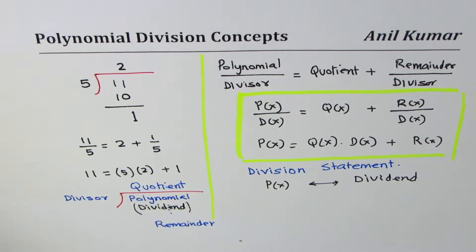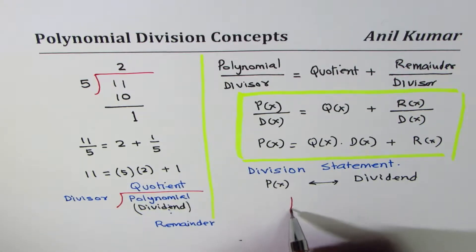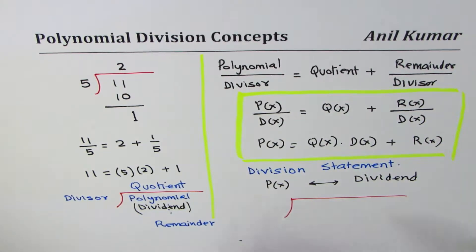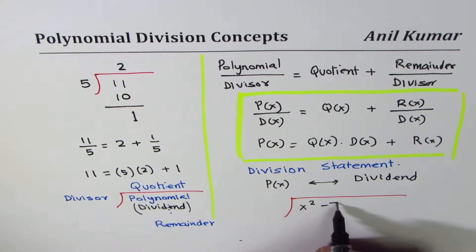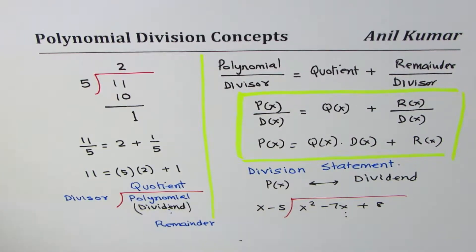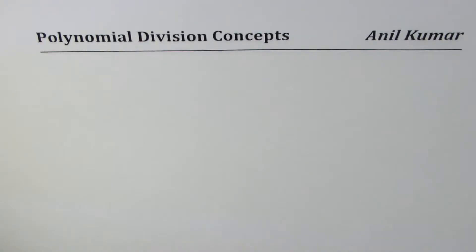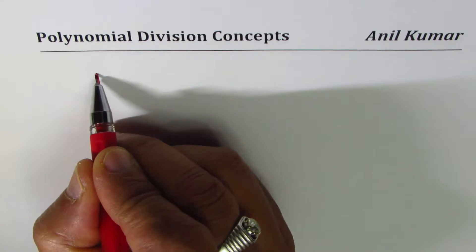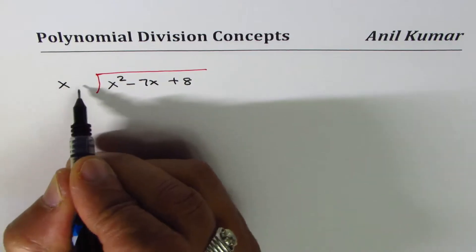In the next example we will see how to divide polynomials. We'll begin with a very simple case — dividing a quadratic function by a linear function, specifically x minus 5. So we are taking x squared minus 7x plus 8 and dividing by the linear function x minus 5.